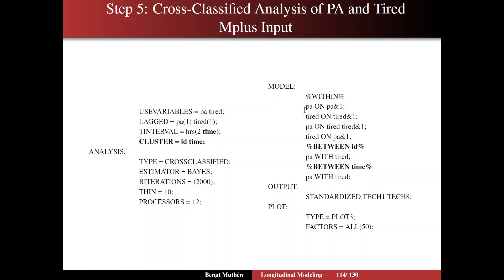The model includes autoregression for each of the two variables, and then we have the lag-zero model — PA on tired, and tired ampersand 1 as well — and then tired on PA ampersand 1. That's within. Now, between ID is PA with tired, meaning variances for both and a covariance. And then we also have between time: PA with tired, variances for both, and the covariance across time.